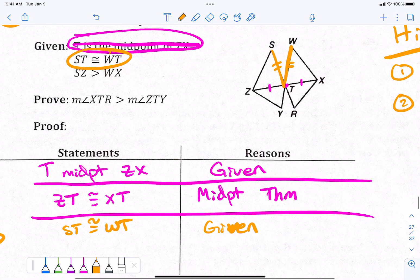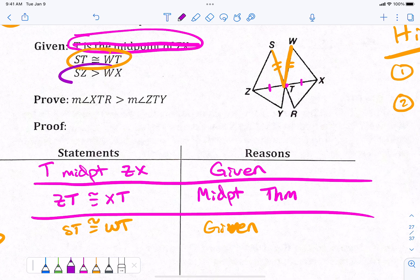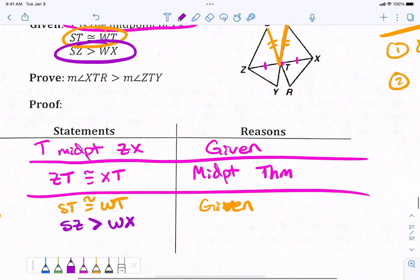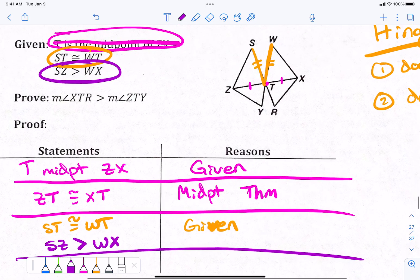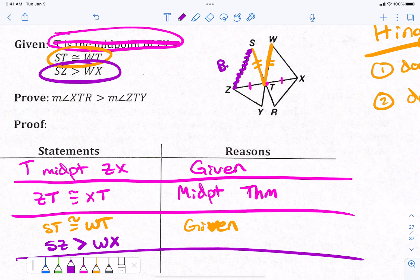Another piece of information that's given to me, I'll use a different color, is this one. SZ is greater than WX. Okay? Let's write down what that means. That's all given. SZ. This side right here is bigger than WX, which is this side. This is a small side. Okay?